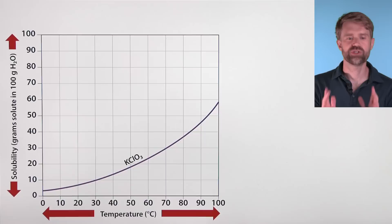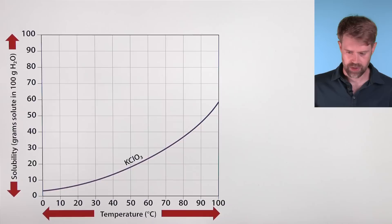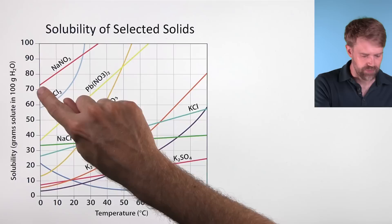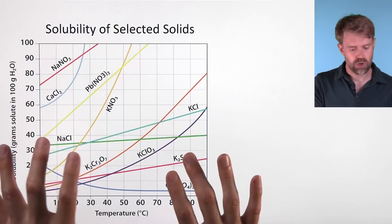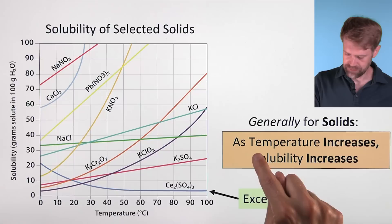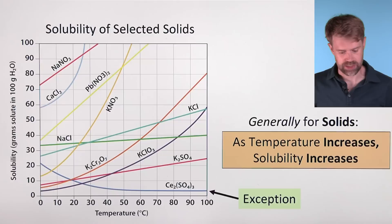We can find temperature and solubility information for all the points on this curve. Obviously, this curve shows us the solubility for just KClO3. But usually when you see solubility curves, they'll be on a graph with lots of others. All these lines represent different solutes — we've got sodium nitrate, calcium chloride, and all these others. They all have different solubilities. We often put them on the same graph to save space, but also so that we can compare them. Right away we can see a general trend: these are all solids, and generally as temperature increases, solubility increases as well. There are some exceptions, like cerium sulfate, which becomes less soluble with increasing temperature. But generally, solids are going to follow this important trend.